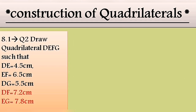Now for the second question of exercise 8.1 — draw quadrilateral DEFG. Two diagonals are given: DF and EG. The construction is easy. We are going to draw DE first.